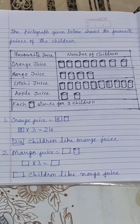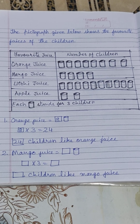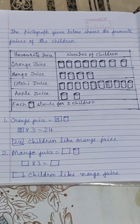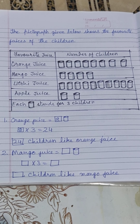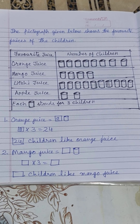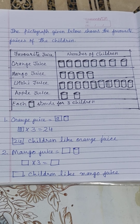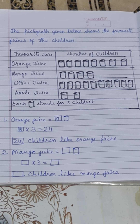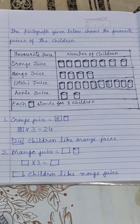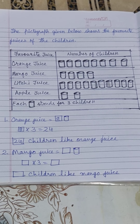Good morning children, take out your math copy, open it. Here you have seen that I have drawn a pictograph which shows the favorite juices of the children. So you have to also draw a table, then name the columns.